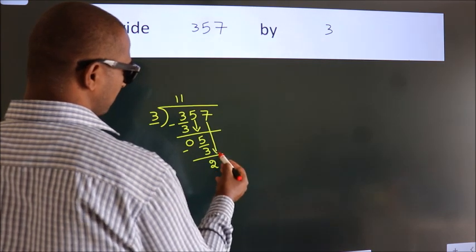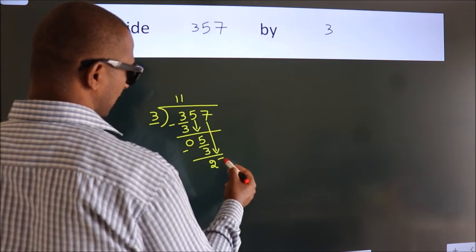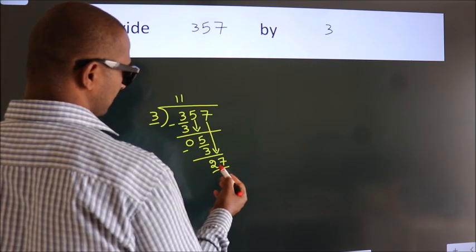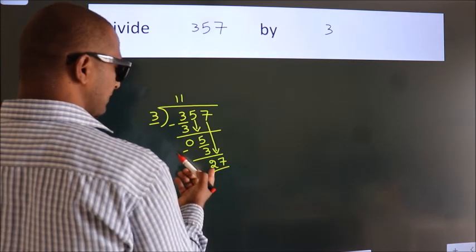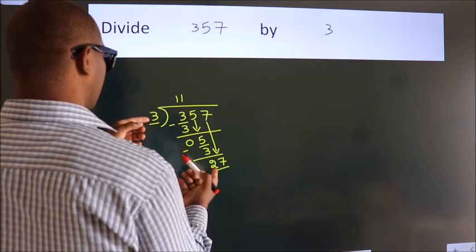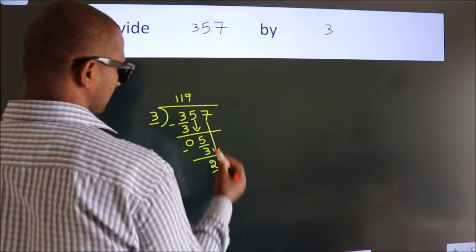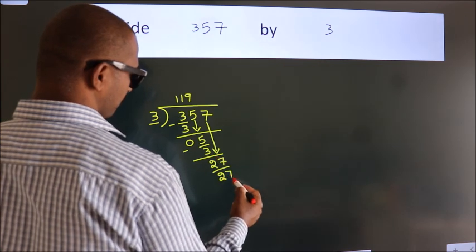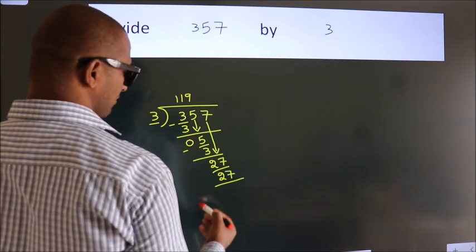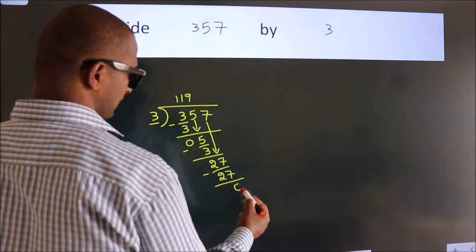After this, bring down the beside number. So, 7 down. So, 27. When do we get 27? In 3 table, 3 nines, 27. Now, we subtract. We get 0.